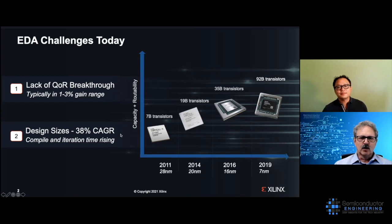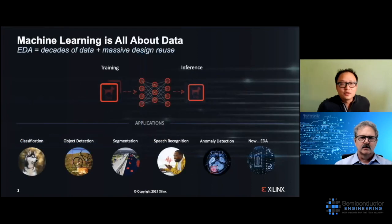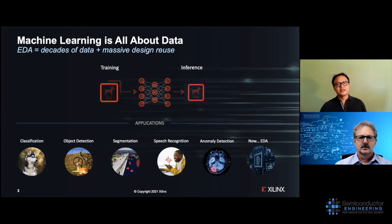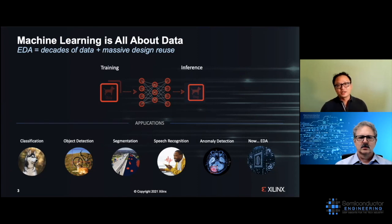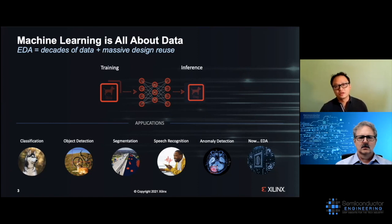Machine learning has been coming into EDA for a while. In 2012, when AlexNet came out, a lot of researchers jumped on it. Now, not only automotive, but data center, medical, and industrial are seeing lots of monetization and commercialization. We think EDA is the next big thing, because the algorithms are so complex and full of heuristics. Companies like Xilinx and EDA companies have been accumulating a huge amount of learning data, which we can use to train the network, complement existing heuristics, further improve quality of results, and achieve faster convergence.